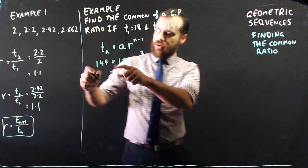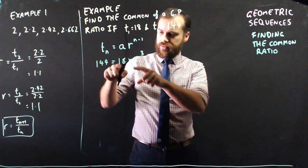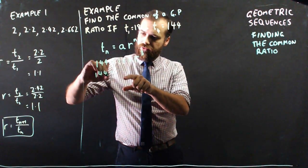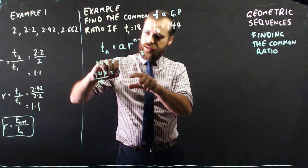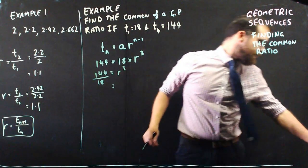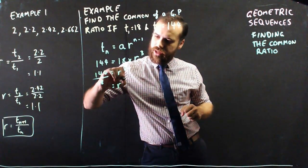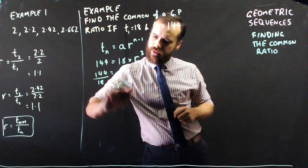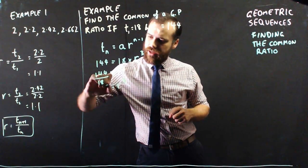Okay, so I can rearrange now by dividing by 18. 144 divided by 18, that's going to be r cubed. So that means that r cubed is now equal to 8.